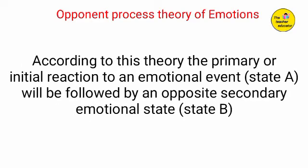According to this theory, the primary or initial reaction to an emotional event — state A — will be followed by an opposite secondary emotional state — state B. The primary emotion is state A, and the secondary opposite emotion is state B.